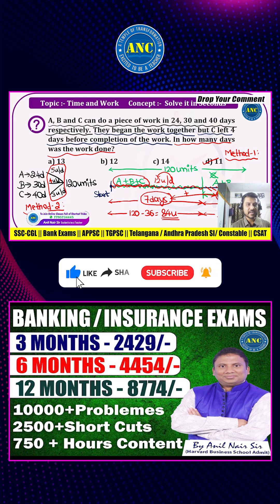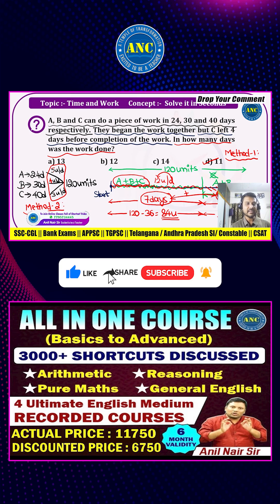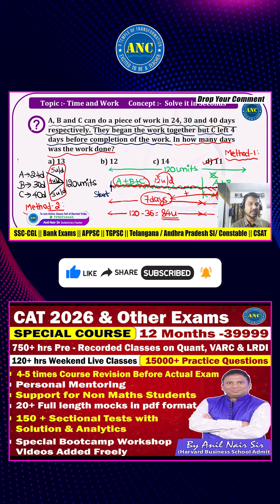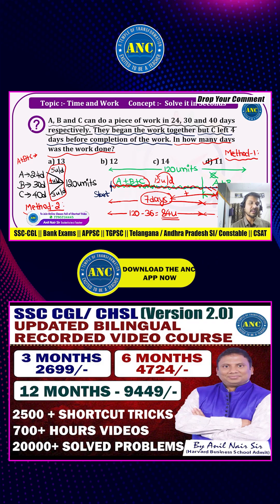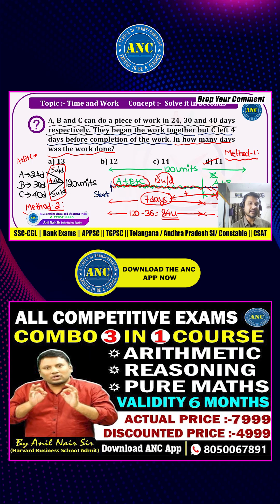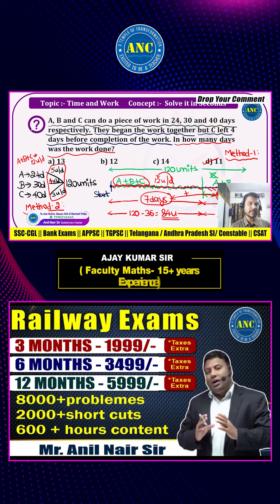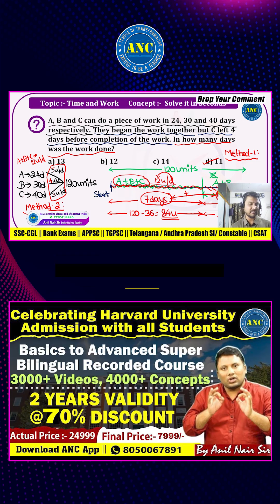A's capacity is 5 units per day, B's capacity is 4 units per day, C's capacity is 3 units per day. The capacity of all three people working together is 5 plus 4 equals 9, plus 3 equals 12. So all three people's combined capacity is 12 units per day, which we also saw in Method 1.